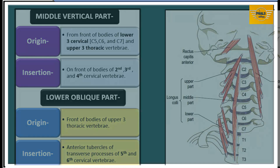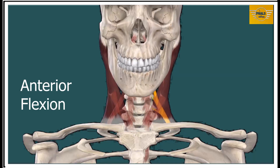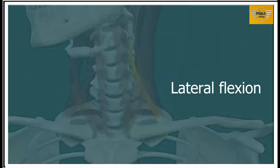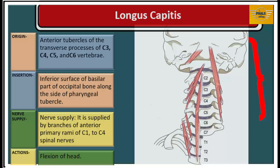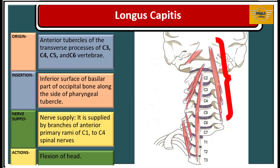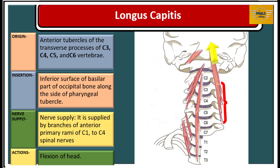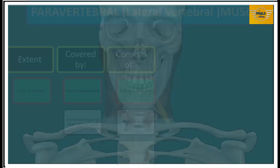The longus coli muscle is involved in anterior flexion of the neck. With the upper oblique part acting alone, it brings about lateral flexion. With the lower oblique part acting alone, it brings about rotation of the neck to the opposite side. The longus capitis arises from the anterior tubercles of the transverse processes of C3 to C6 vertebrae, then ascends to insert into the inferior surface of the basilar part of the occipital bone alongside the pharyngeal tubercle. Its innervation is from the branches of the anterior primary rami of the upper four cervical spinal nerves, C1 to C4. Its action is flexion of the head.